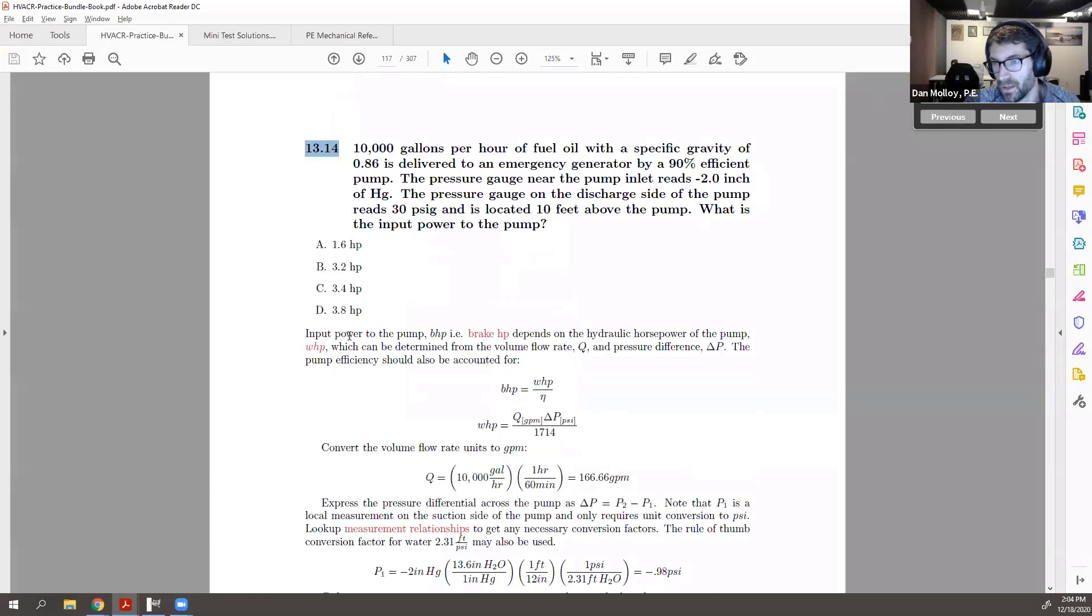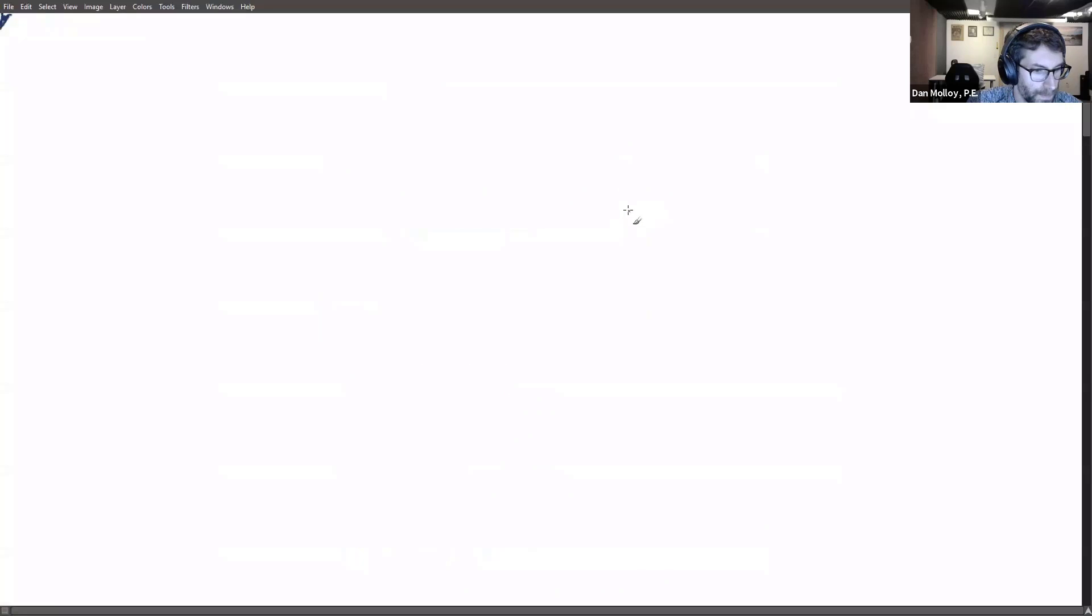So this problem has a couple of things going on. You have a pressure gauge on the suction side of the pump, on the inlet, but then on the discharge side, the gauge is some distance away and 10 feet above the pump.